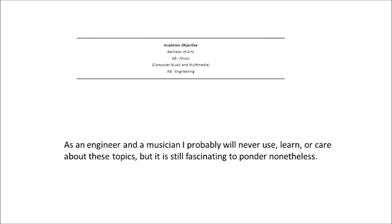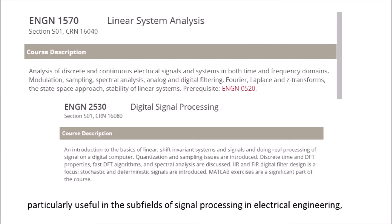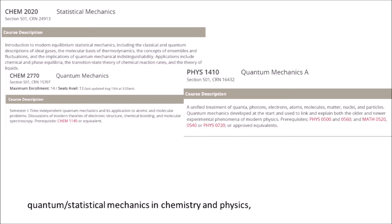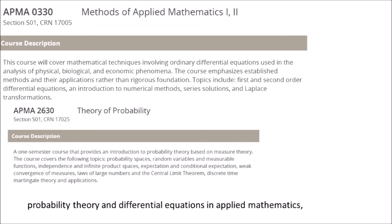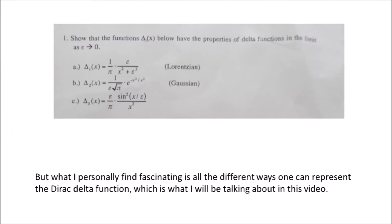As an engineer and a musician, I probably will never use, learn, or care about these topics, but it is still fascinating to ponder nonetheless. The Dirac delta function is extremely important in many fields of applied math, science, and engineering — particularly useful in signal processing and electrical engineering, quantum and statistical mechanics in chemistry and physics, probability theory and differential equations in applied mathematics, and electrodynamics in physics. What I personally find fascinating is all the different ways one can represent the Dirac delta function, which is what I will be talking about in this video.